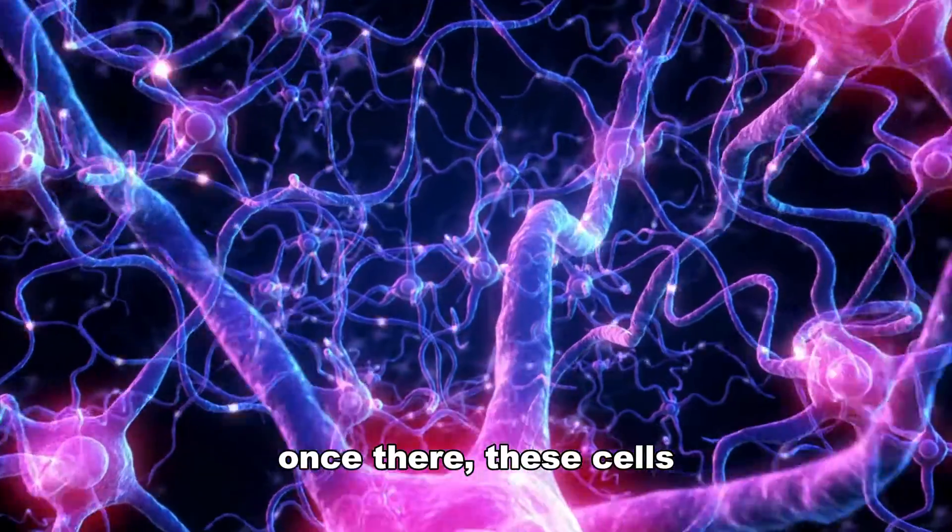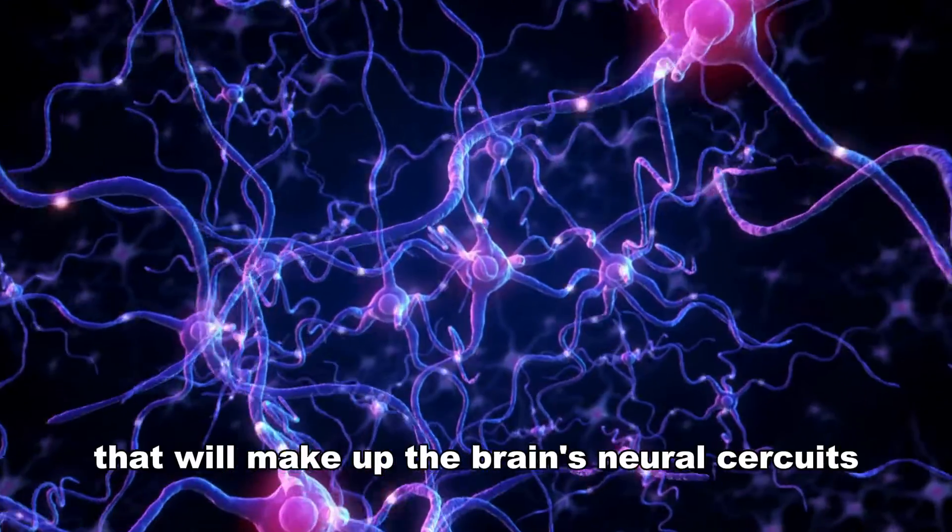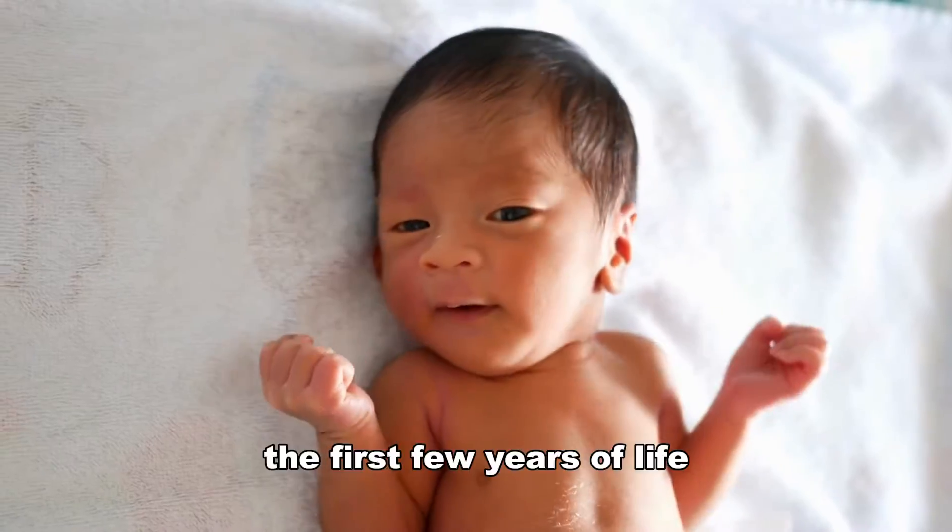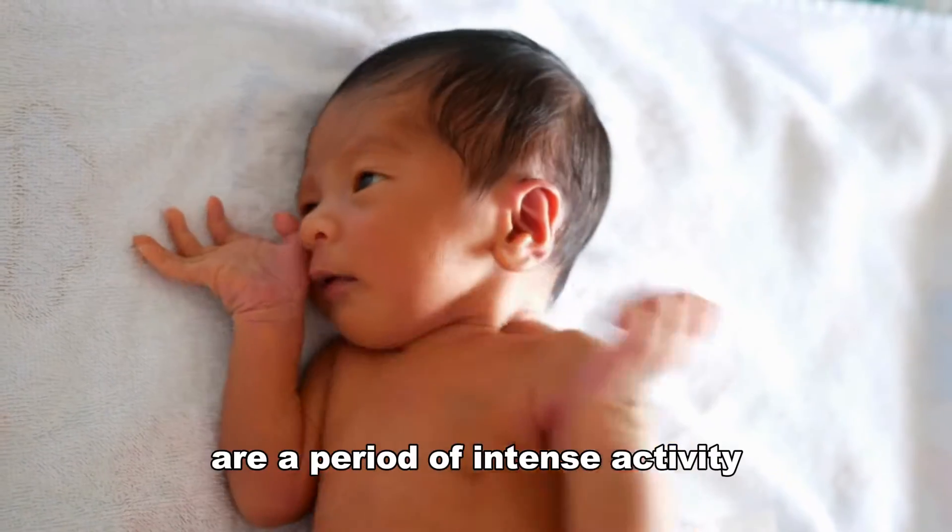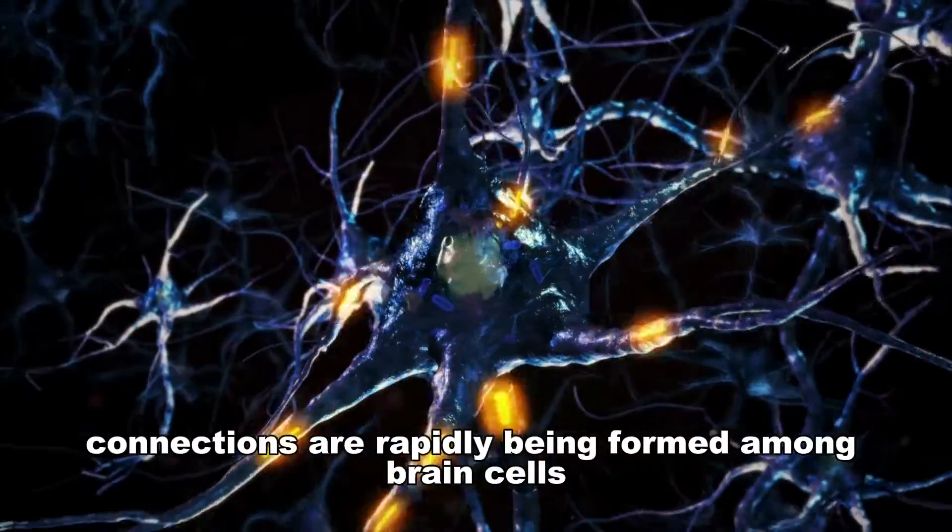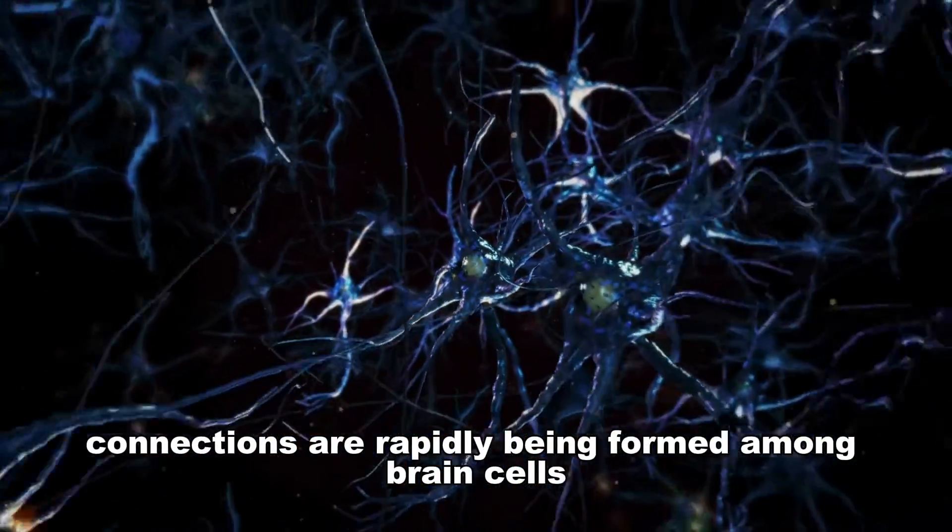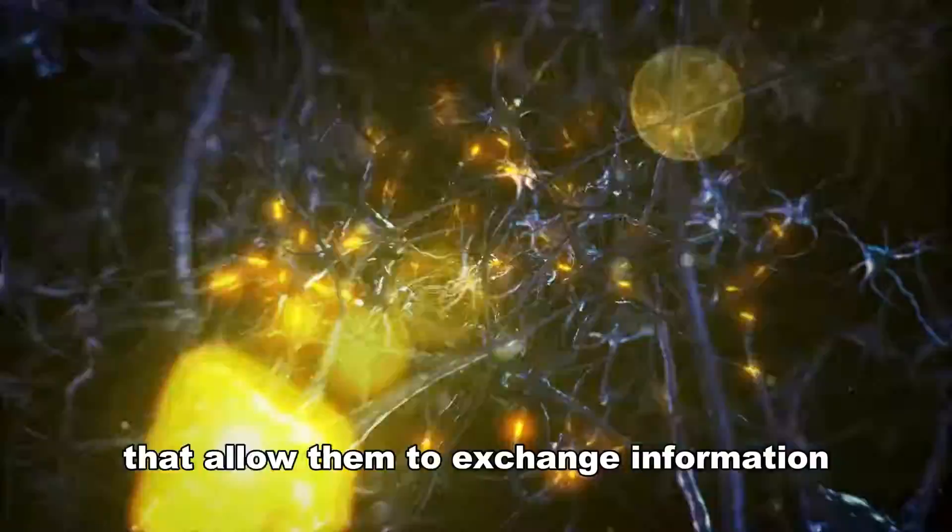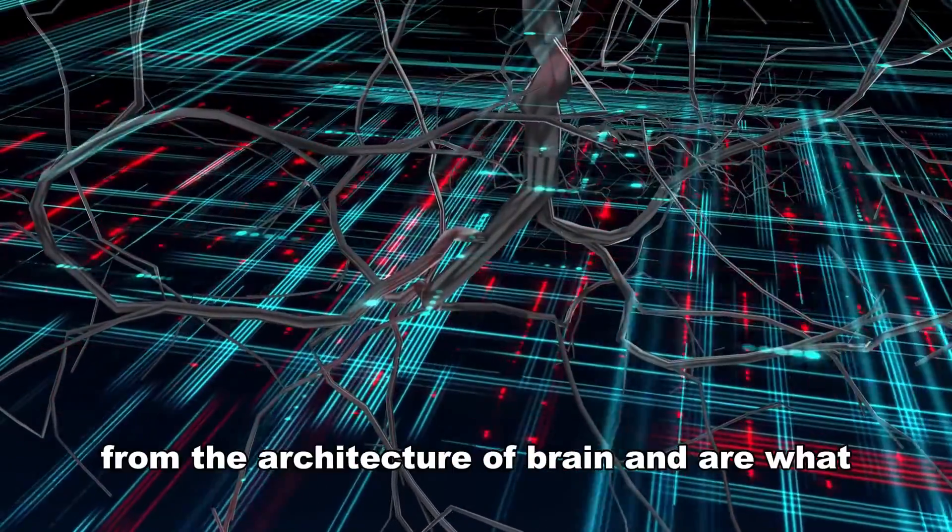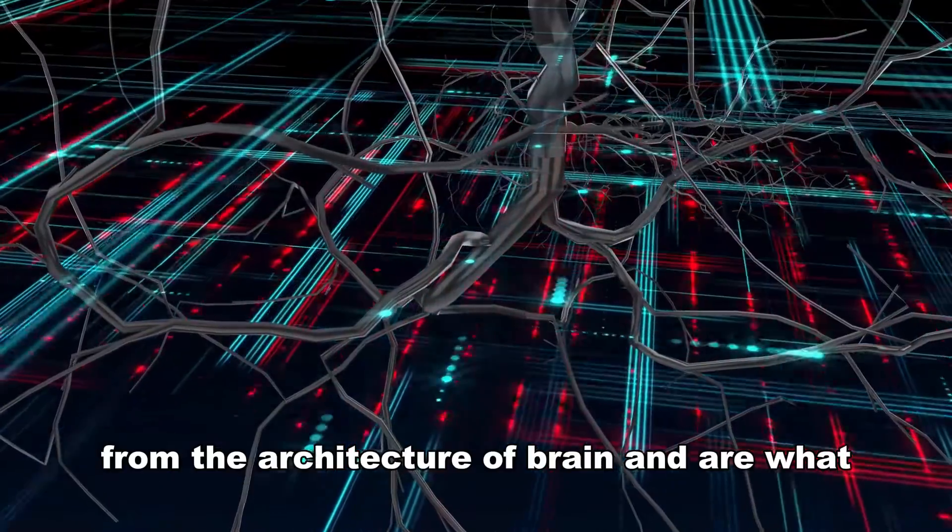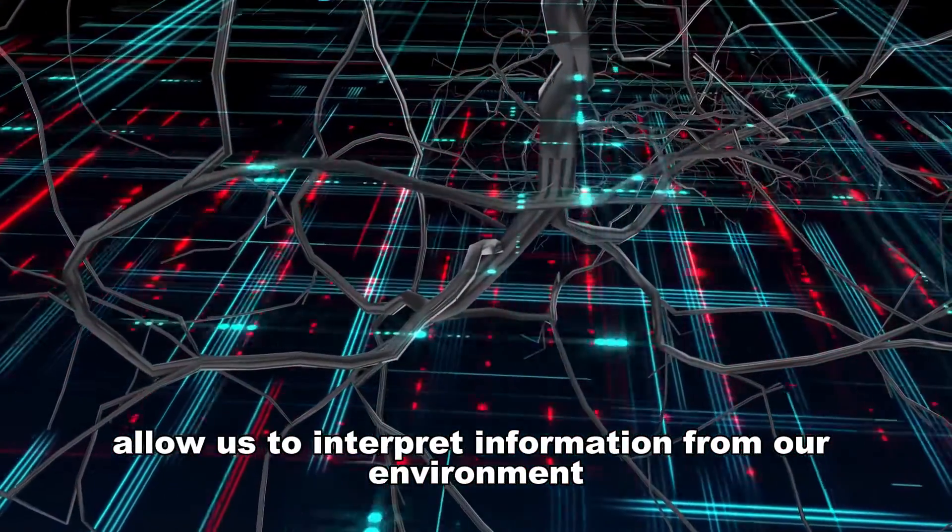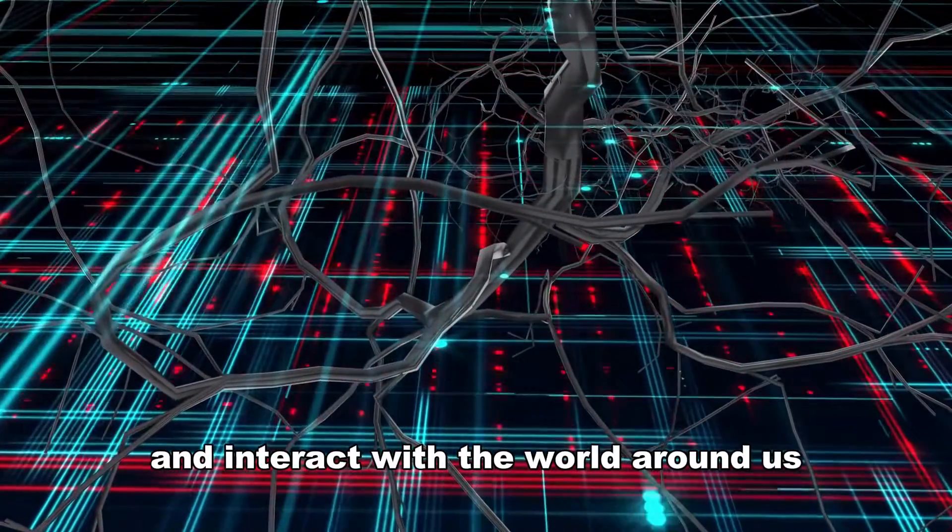Once there, these cells begin to form the connections that will make up the brain's neural circuits. The first few years of life are a period of intense activity in the developing brain. Connections are rapidly being formed among brain cells that allow them to exchange information and form circuits. These circuits form the architecture of the brain and are what allow us to interpret information from our environment and interact with the world around us.